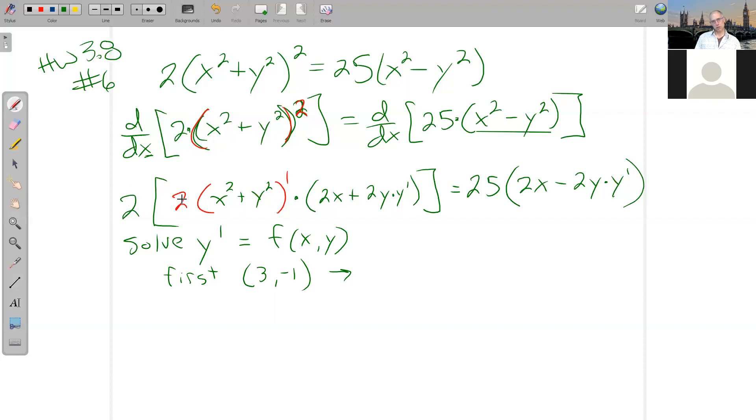I'm going to clean it up just a little bit. Multiply the 2 in here. So I'm just going to write it as 4 times x is 3 squared plus y is negative 1 squared times 2 times x which is 3, plus 2 times y which is negative 1 times y prime, and close parentheses.